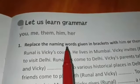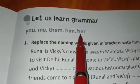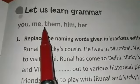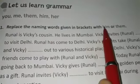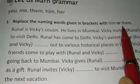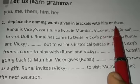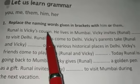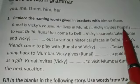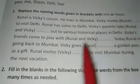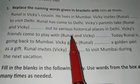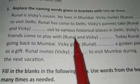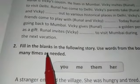Next, learn grammar — 'you, me, them, him, her.' These are pronouns, which you also learned in the course book. Replace the naming words given in brackets with 'him' or 'them.' 'Him' is used for boys; 'them' is used for plural nouns. For example: 'Ronal is Vicky's cousin, he lives in Mumbai, Vicky invites ___' — use 'him' because Ronal is a boy. If the bracket has 'Ronal and Vicky' — those are plural, so use 'them.'